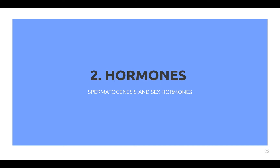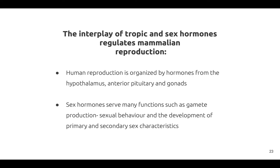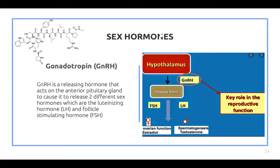In this section we will talk about spermatogenesis, the production of sperm, and key sex hormones involved before and during puberty. Human reproduction is organized by hormones from the hypothalamus, anterior pituitary, and gonads. Sex hormones serve many functions including gamete production, sexual behavior, and development of primary and secondary sex characteristics. Gonadotropin-releasing hormone, GnRH, acts on the anterior pituitary gland to release two sex hormones: luteinizing hormone, LH, and follicle-stimulating hormone, FSH.